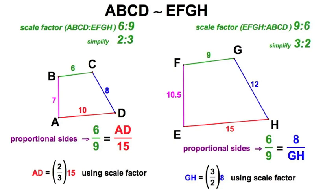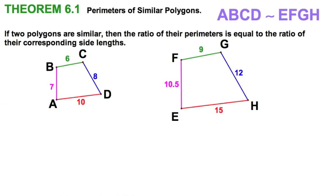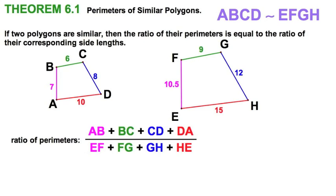Let's use our same two quadrilaterals - these two similar figures right here - and we're going to demonstrate Theorem 6.1: Perimeters of Similar Polygons. It says very simply that if I take the ratio of these perimeters, I'll add up all the sides from ABCD and compare that to all the sides of EFGH. I should get the same ratio as any individual pair of sides, as we did before: six to nine and eight to twelve, etc.